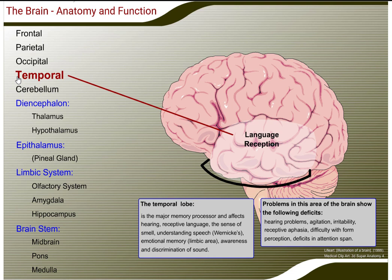The temporal lobe is the major memory processor and affects hearing, receptive language, the sense of smell, understanding speech, emotional memory, and awareness and discrimination of sound. Problems in this area show the following deficits: hearing problems, agitation, irritability, receptive aphasia, difficulty with form perception, and deficits in attention span.